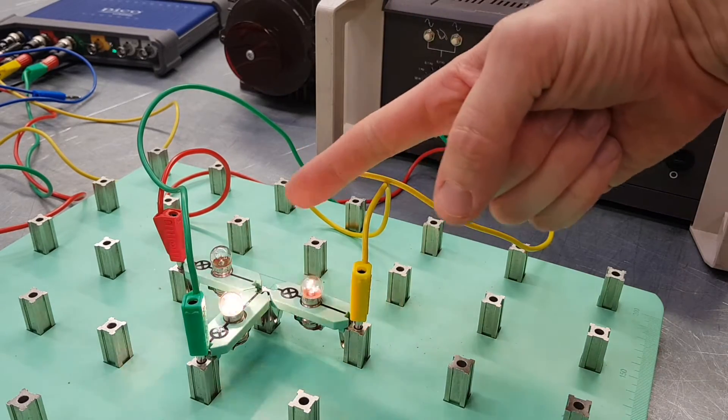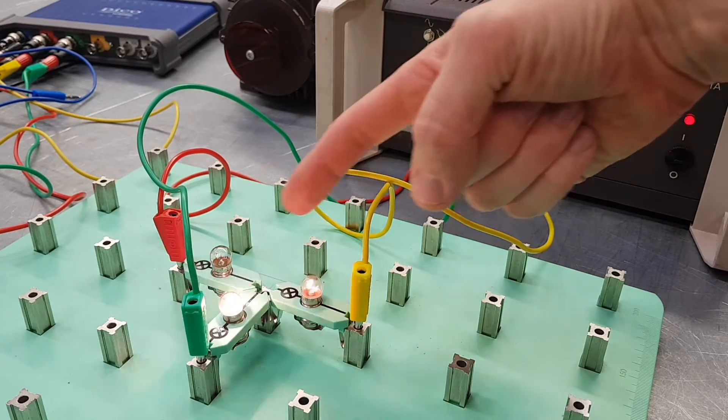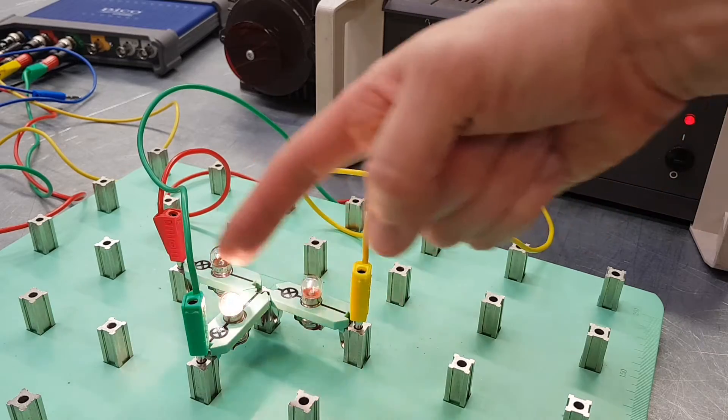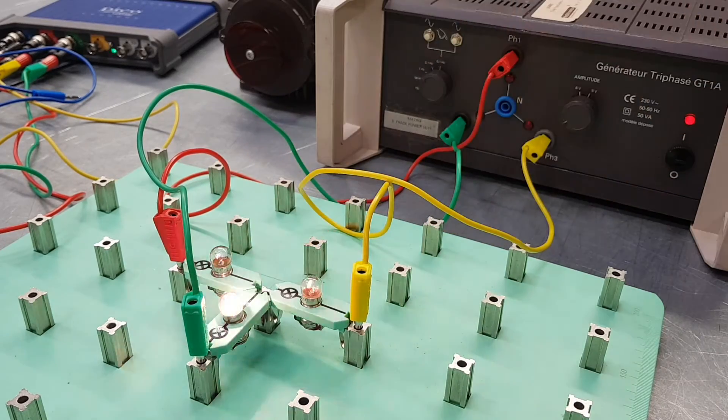The key point to see here is the lamps are actually flashing on and off in order. They're almost going around in a cycle there, and that's quite a key point for helping us to understand how three-phase circuits work.